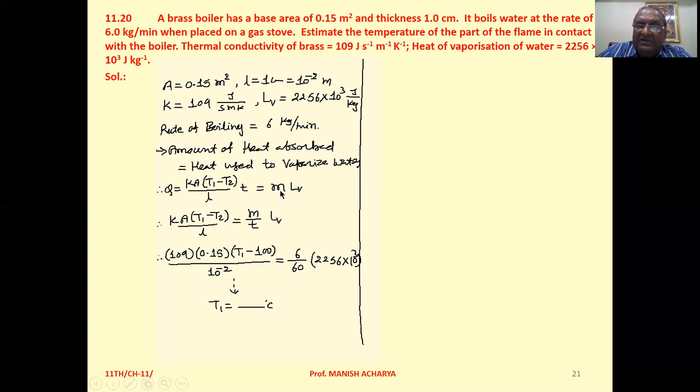So we can write k × A × (T₁ - T₂) / L, that is m / t into Lᵥ.